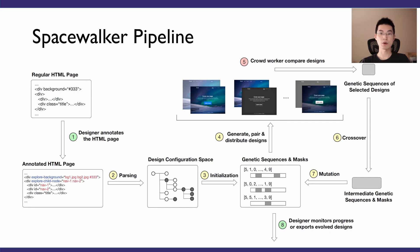Under the hood, Spacewalker uses a genetic algorithm to iteratively generate candidate designs. As an overview, Spacewalker randomly generates a first batch of designs as the first generation. Then, within each generation, crowd workers' design preferences serve as a fitness function. The preferred designs will be mutated and crossed over with other designs, which generates the next generation of designs. For further details and enhancements made to the algorithm, please refer to section 4.2 of our paper.